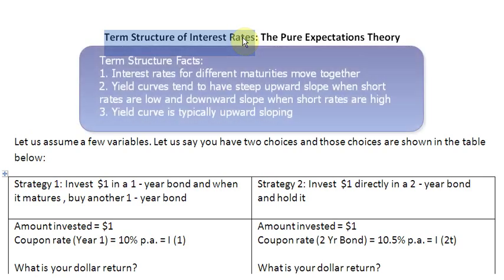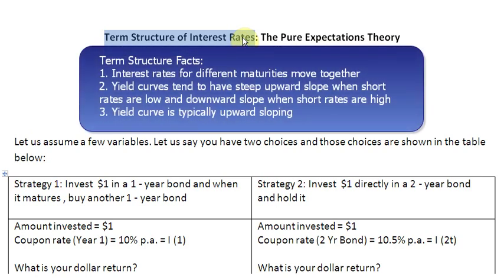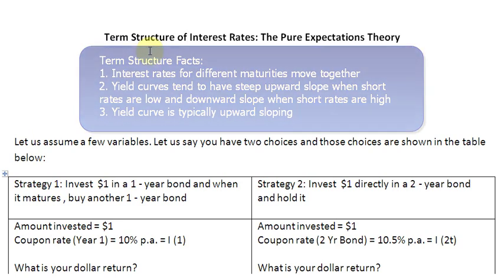What are these facts? Fact number one is that interest rates for different maturities move together. Fact number two is that yield curves tend to have a steep upward slope when short-term interest rates are low and a downward slope when short-term interest rates are high. And fact number three is that yield curves have a typically upward sloping shape.